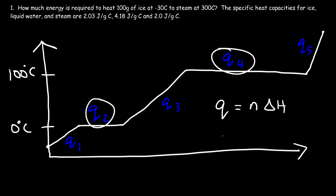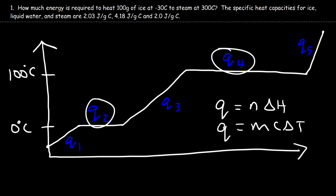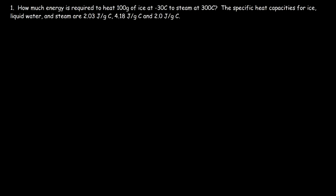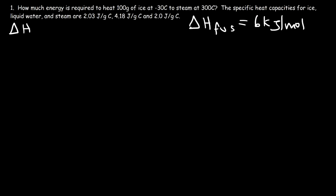Q1, Q3, and Q5 are associated with a temperature change, so you calculate those values using MC delta T. The enthalpy of fusion for water is about 6 kilojoules per mole, and the enthalpy of vaporization is 40.7 kilojoules per mole.